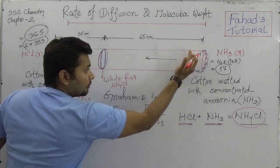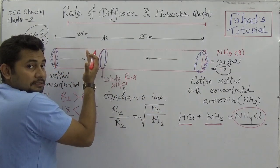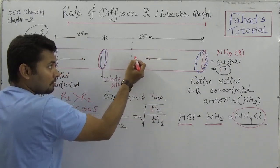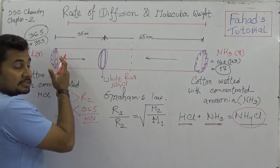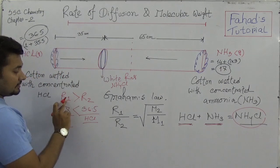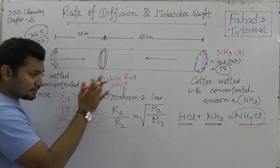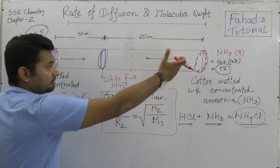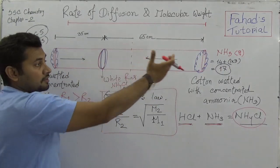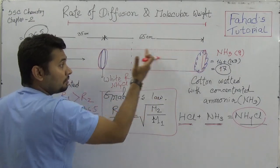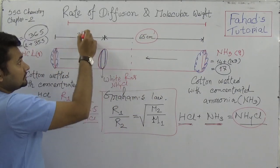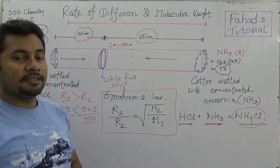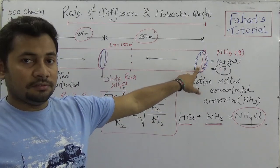That is why ammonia traverses a greater distance. Ammonia passes more distance toward the HCl end because it has comparatively less molecular weight. The lower the molecular weight, the greater the rate of diffusion, and thus it traverses more distance — 65 centimeters versus 35 centimeters in a total one-meter tube.